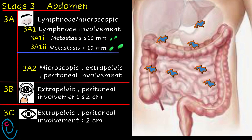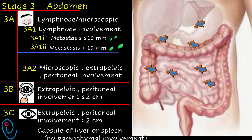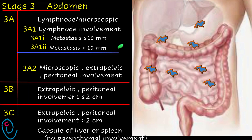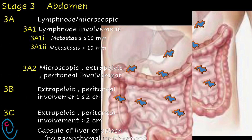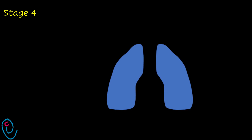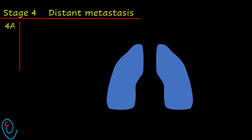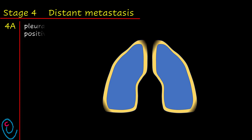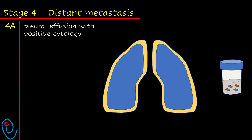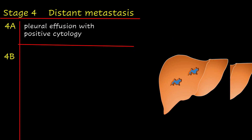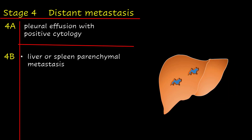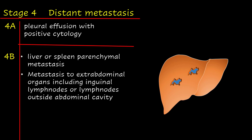Stage 3c also includes extension to the capsule of the liver or spleen without parenchymal involvement. Stage 4 includes distant metastases. 4a involves pleural effusion with positive cytology. 4b involves liver or spleen parenchymal metastases, and also metastases to extra-abdominal organs, including inguinal lymph nodes or lymph nodes outside the abdominal cavity.